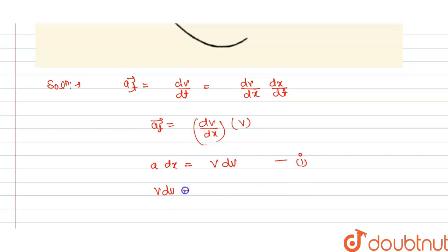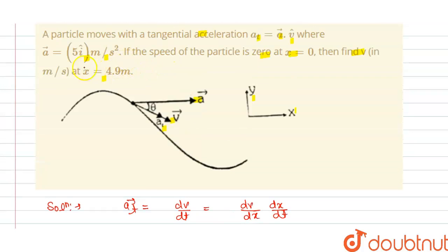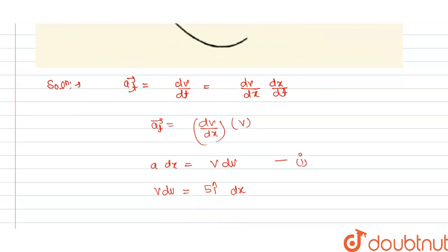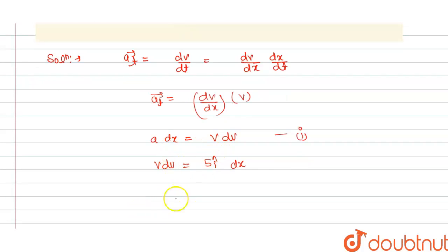So v dv = 5 dx. This is acceleration a into dx. Now integrate both sides.